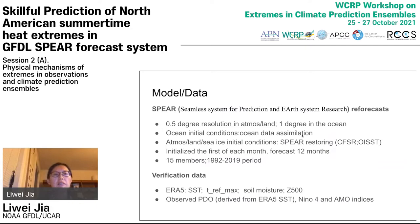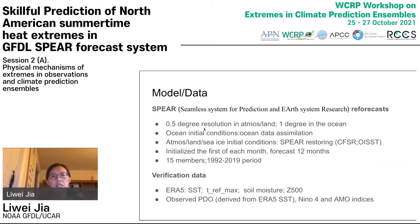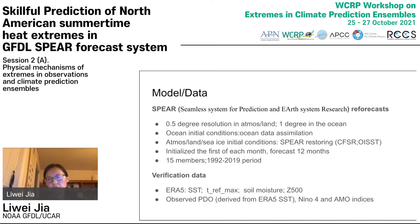In this study, we used the GFDL seasonal forecast system called SPEAR, which stands for Seamless System for Prediction and Earth System Research. We used SPEAR forecasts from 1992 to 2019, which has 15 or more ensemble members. The model has a half-degree resolution in the atmosphere and land, and one-degree resolution in the ocean. We used ocean initial conditions from ocean data assimilation.